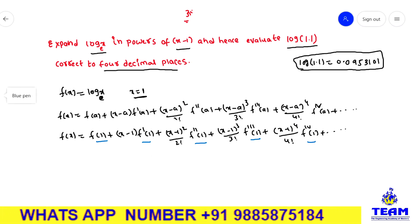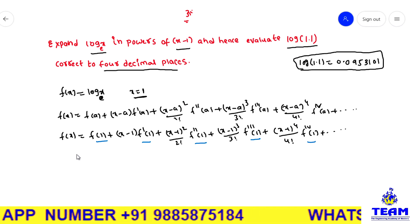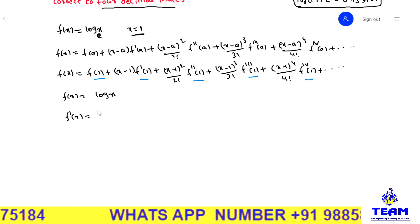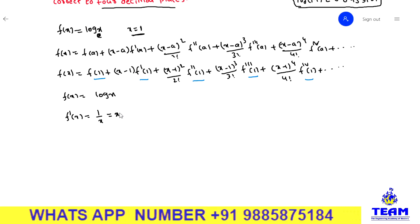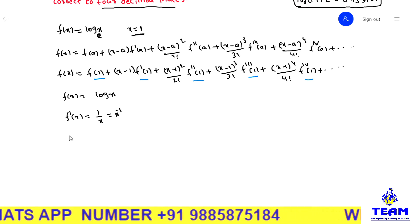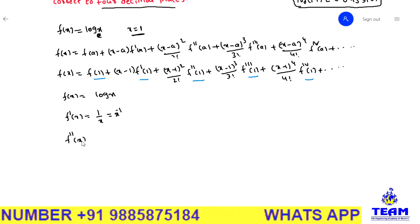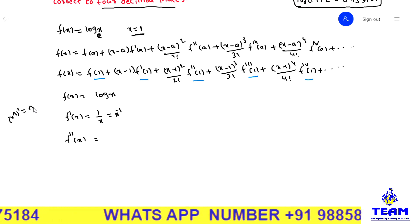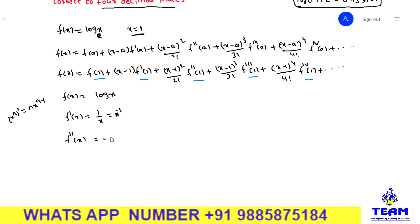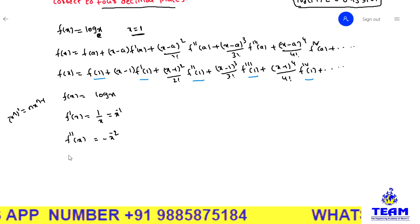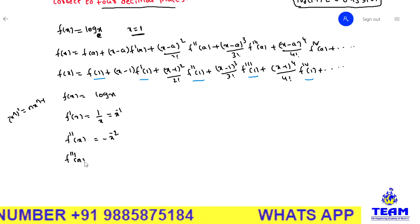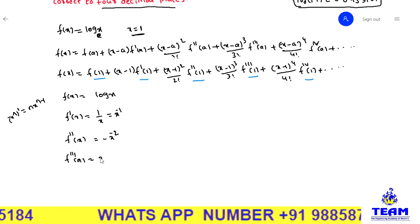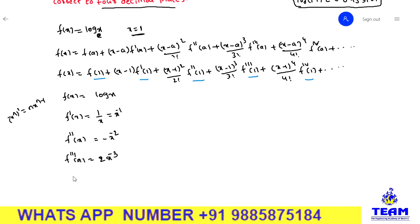Now we are differentiating the given f(x) with respect to x. The first derivative f'(x) = 1/x, which we can also write as x⁻¹. The second derivative f''(x): since the derivative of x⁻¹ is −x⁻², we get f''(x) = −x⁻². The third derivative f'''(x): differentiating −x⁻² gives minus times minus, so positive 2·x⁻³. Thus f'''(x) = 2x⁻³.